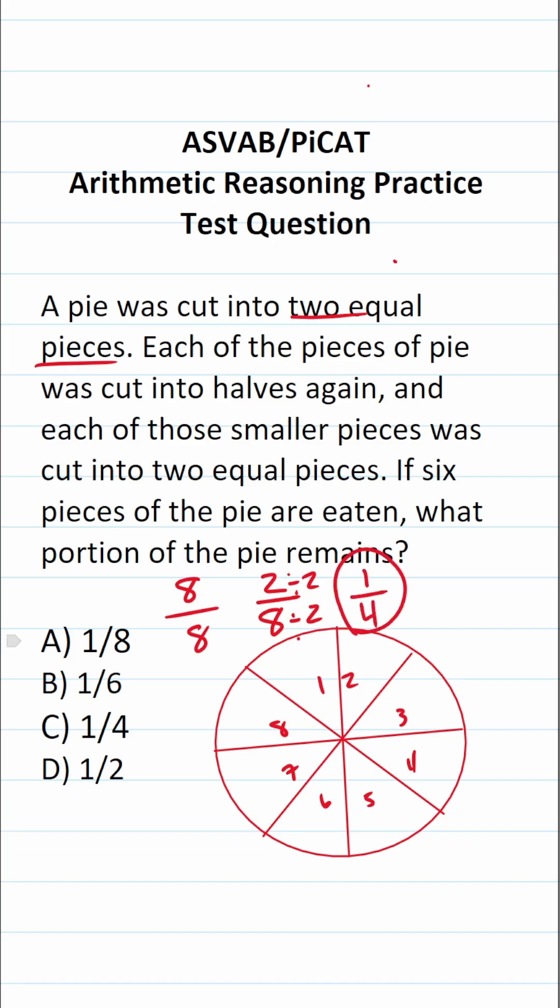So if six pieces of this pie are eaten, that leaves us with one quarter of the pie left. So this one is going to be C.